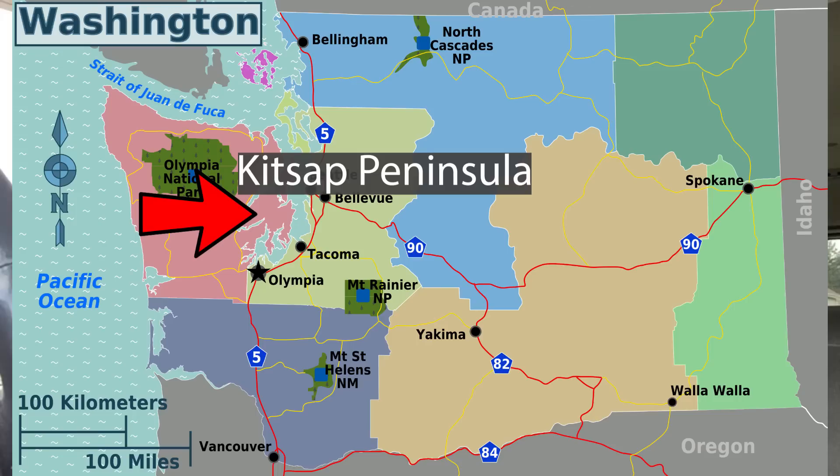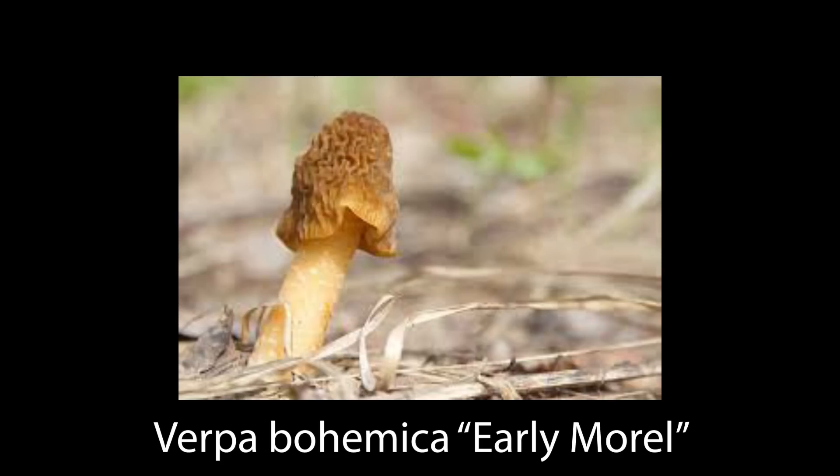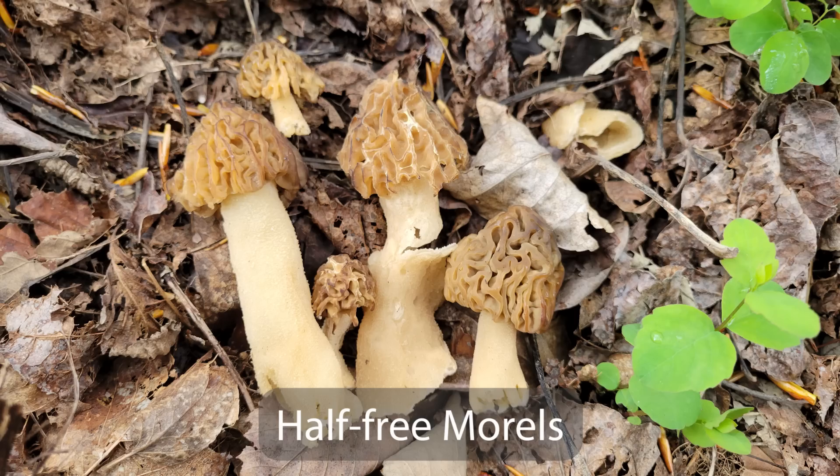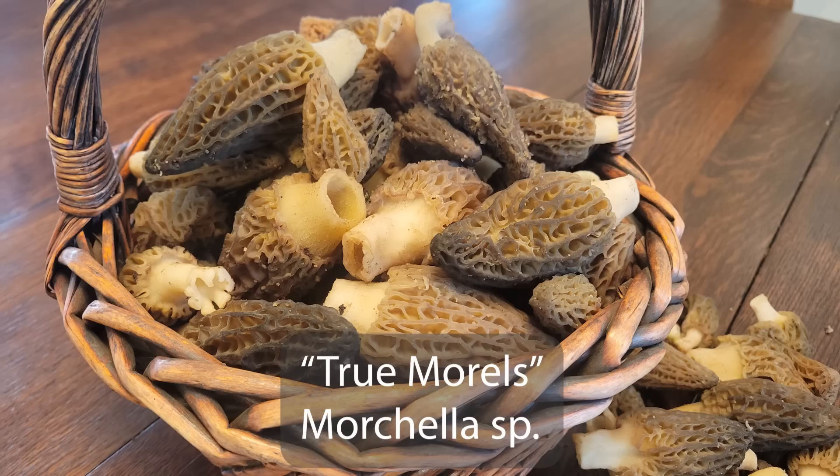Welcome to another episode of Mushroom Wonderland. This one's going to be a little different. Usually I go out into the forest and help identify mushrooms I find along the way. Today I'm going to deliberately head out in search of morels growing near cottonwoods. We can find Verpa bohemica, the early morel, half free morels, and regular Morcella species that grow underneath cottonwoods.